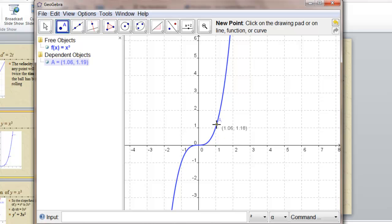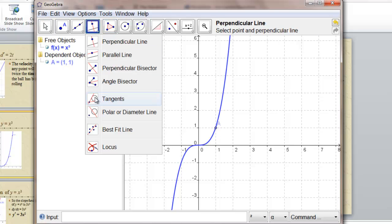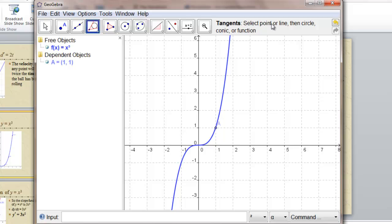This is how you attach a tangent line. First you put a point on the curve, and that's attached to the curve, and you can move it around. Tangent lines are here, tangents. Select the point or the line, then the circle conic or function. Select the point, then the curve, and there's the tangent line. That's the approximation of the slope of the curve at that point. We can move that point around.